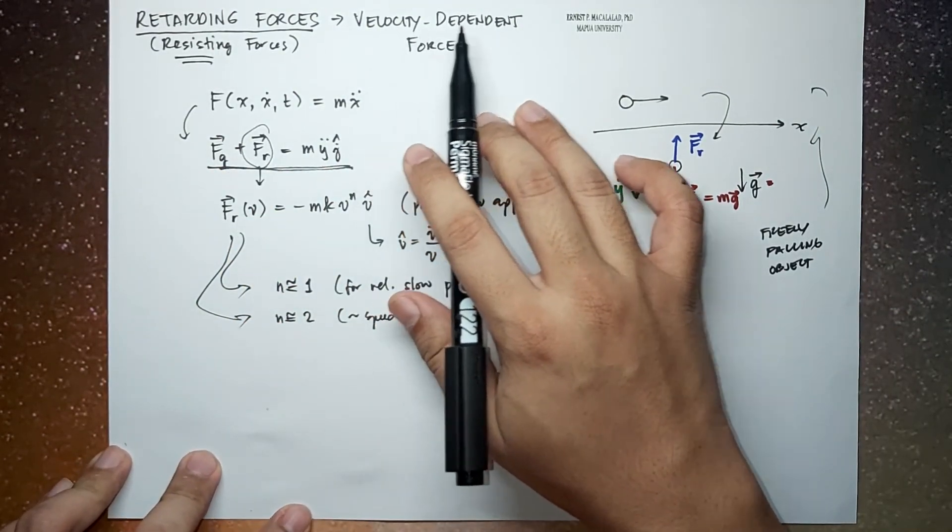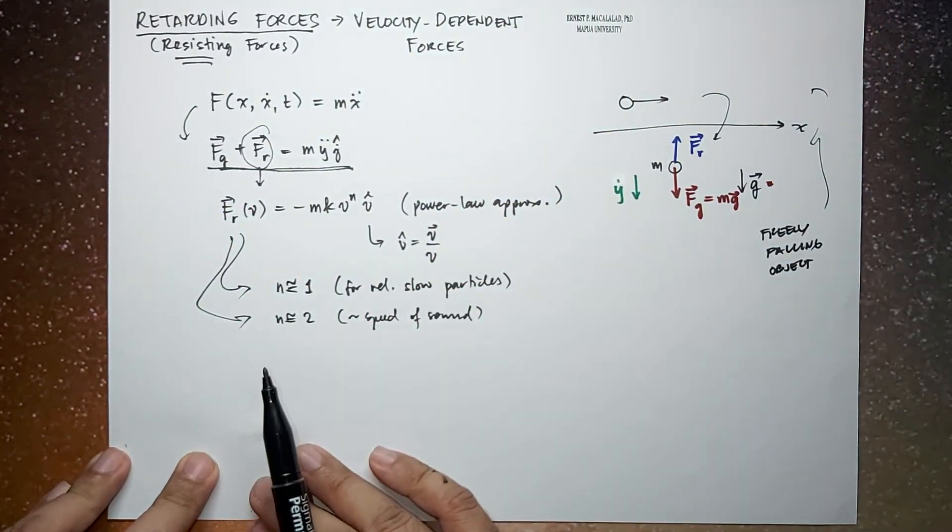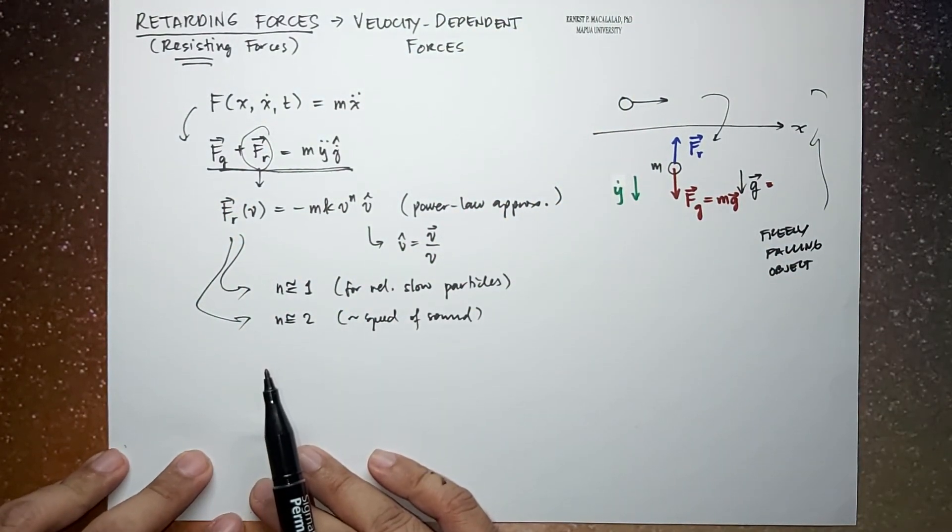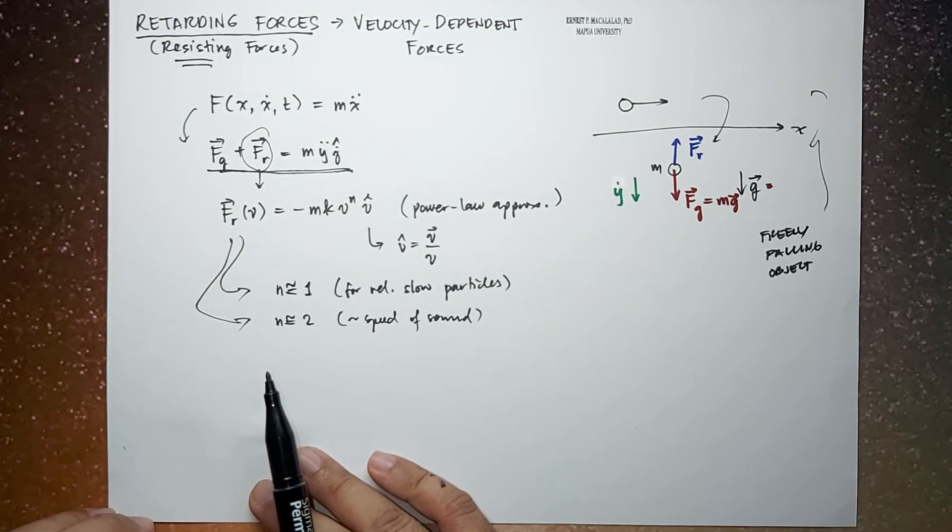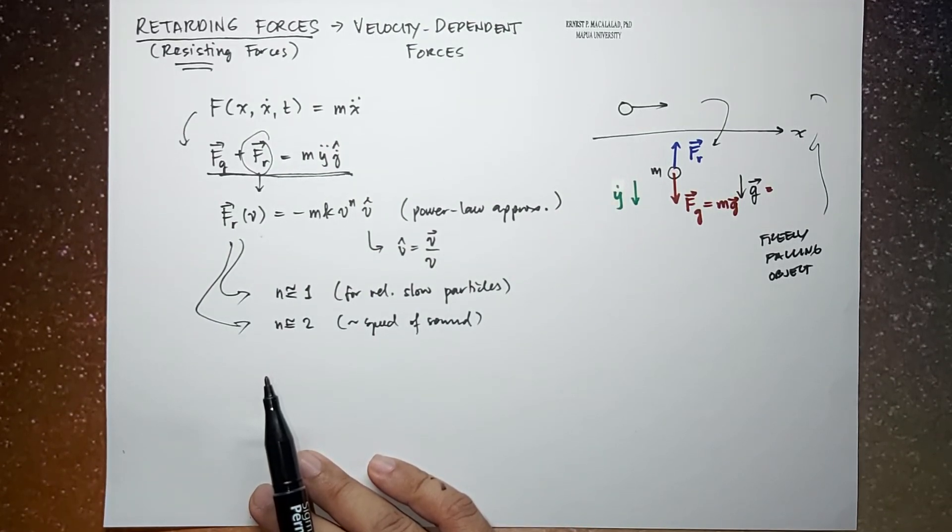So that's a quick review of retarded forces, also known as your velocity-dependent forces or resisting forces or air resistance. Thank you very much for watching. I hope you learned something today, and I'll see you guys in the next video. Bye bye!